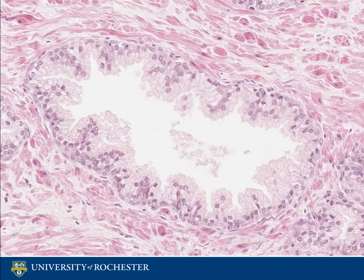The stroma contracts during ejaculation in order to expel any intraluminal glandular secretions. You can also see a layer of basal cells located between the epithelium and the stroma. These basal cells aid in the regeneration of epithelial cells. Note that the majority of normal epithelial cells of these glands do not contain nucleoli, whereas basal cells do.